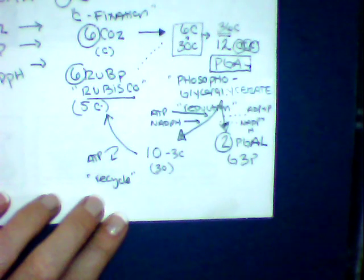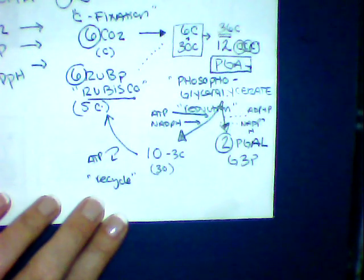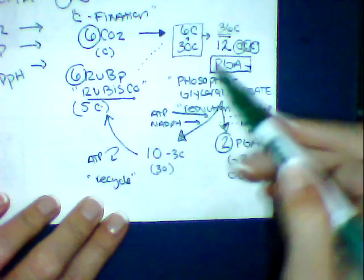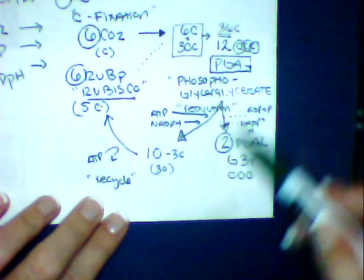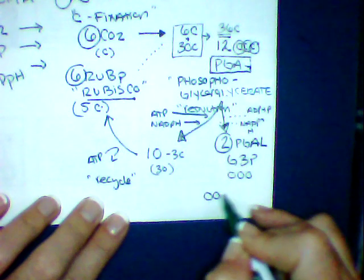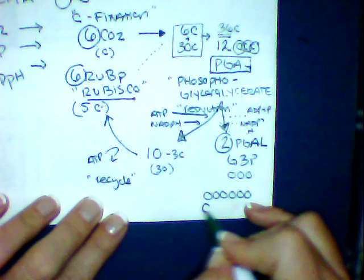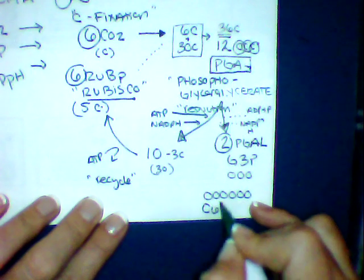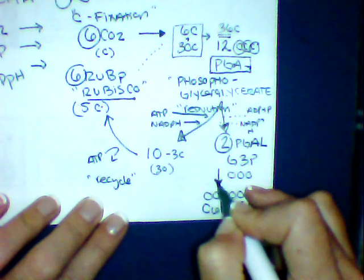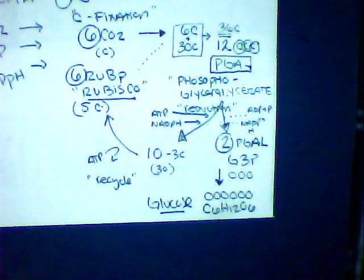Let's talk about our 2 PGALs. If you only have 2 PGALs, which are a 3-carbon molecule, we're going to need to go through this cycle a couple times in order to create a 6-carbon molecule. And that 6-carbon molecule will be C6H12O6.